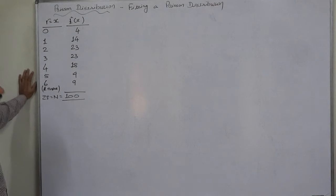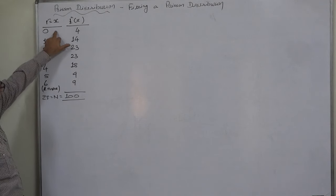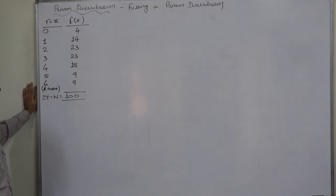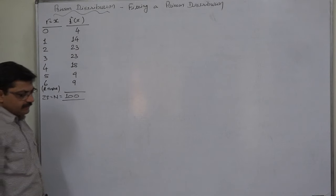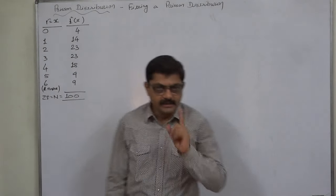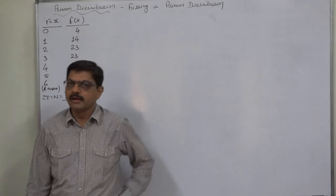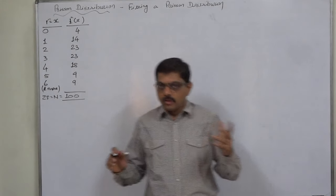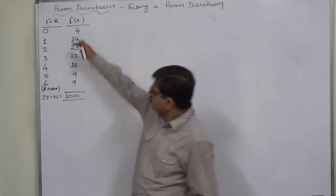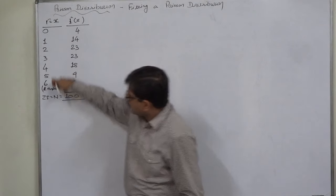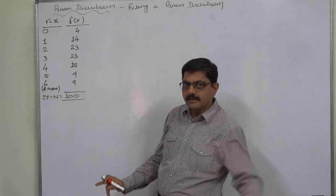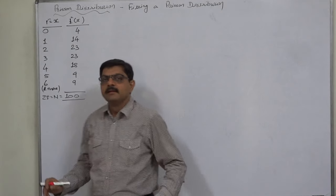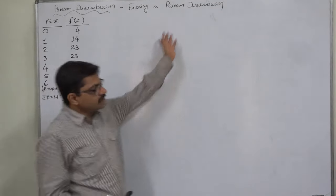We have been given a frequency distribution. Let R equal x, which can take values 0, 1, 2, 3, 4, 5, and 6 or more — meaning this is an open-ended frequency distribution. In this type of problem, first we calculate the mean, because without the mean we cannot calculate Poisson probabilities. Then we calculate the Poisson probabilities for all possible outcomes, multiply them by N, and the result will be the expected frequency according to the Poisson distribution.